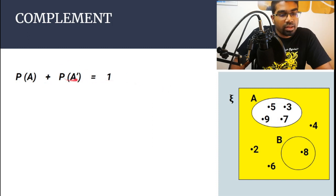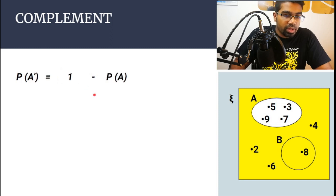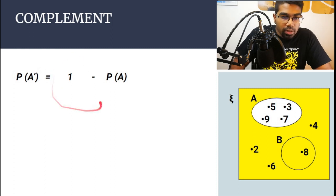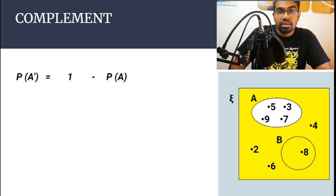When we rearrange this and make the probability of the complement of A the subject of the equation, we get: the probability of the complement of an event equals one minus the probability of the event. This is the second key formula.